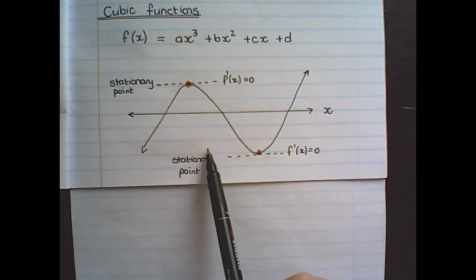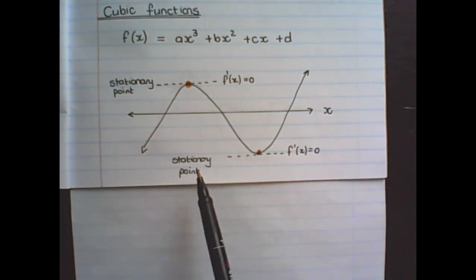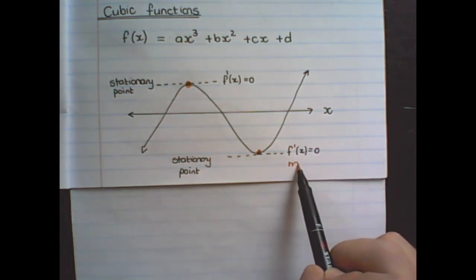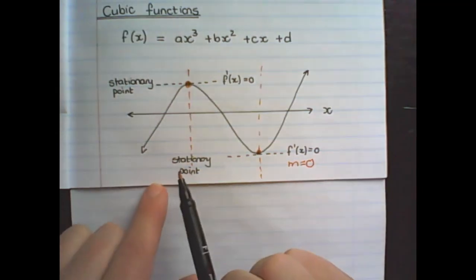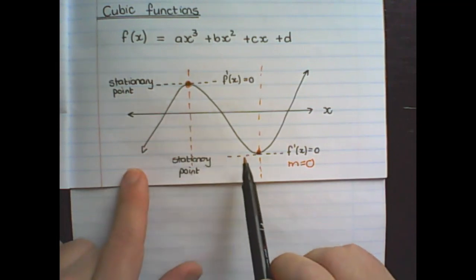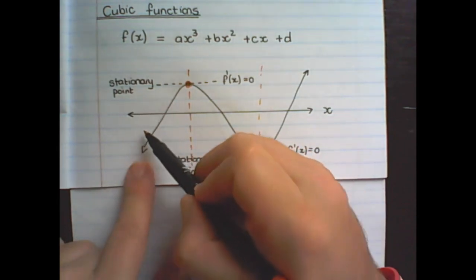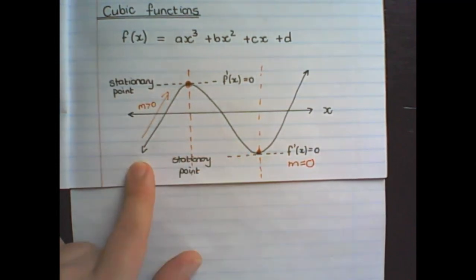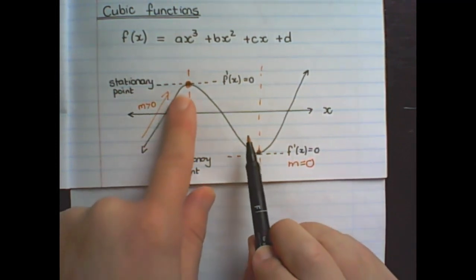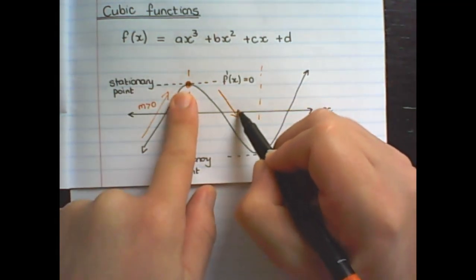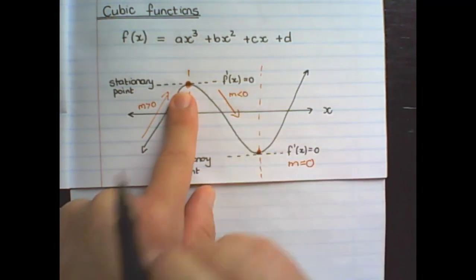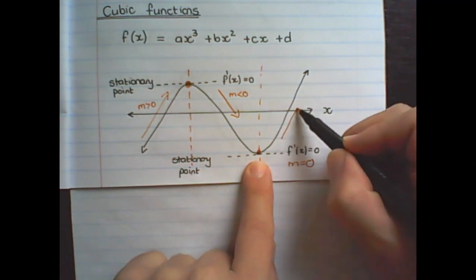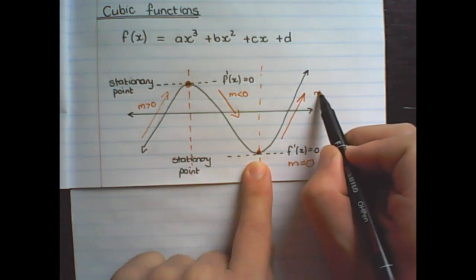We will refer to stationary points instead of turning points. Stationary points means there is no movement, there is no rate of change, so if there is no rate of change the gradient is equal to zero. Following the flow from left to right: up until the first stationary point the gradient is increasing, meaning bigger than zero. Between the two stationary points the gradient is going downwards — it is decreasing, smaller than zero. Then moving towards the right from the second stationary point the gradient is increasing again, bigger than zero.